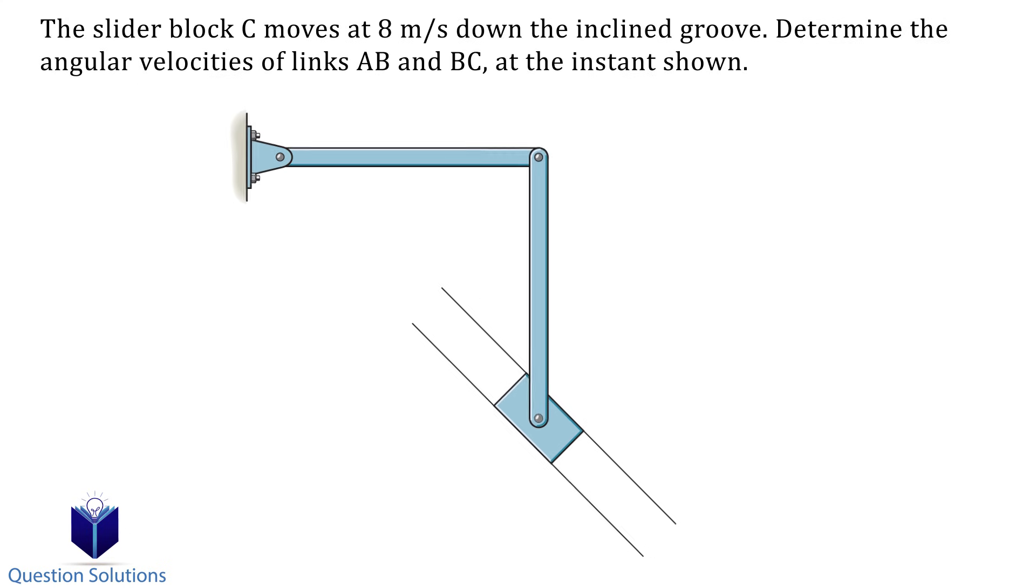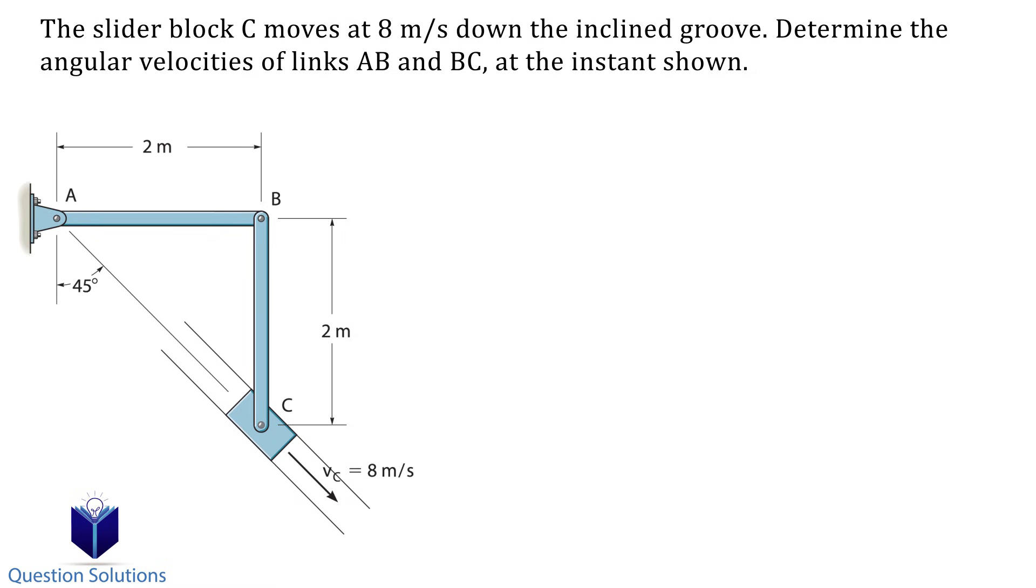Let's take a look at this question where we need to find the angular velocities of links AB and BC. Looking closely, we see that when the slider moves down the incline, link AB will rotate clockwise and link BC will rotate counterclockwise. We need to find that angular velocity. First we will set up our coordinate system like this. This establishes which sides we will consider to be positive.